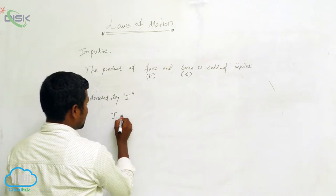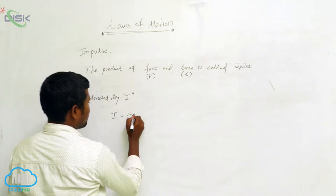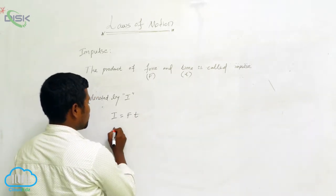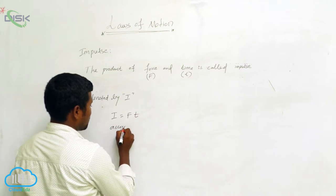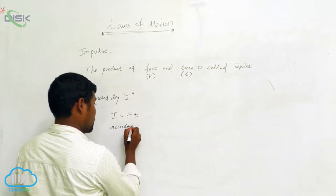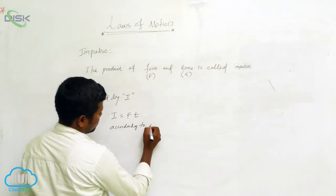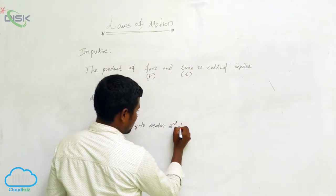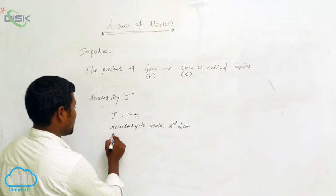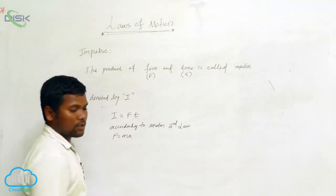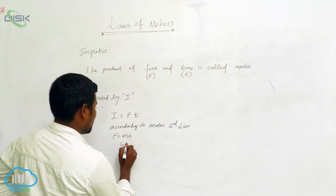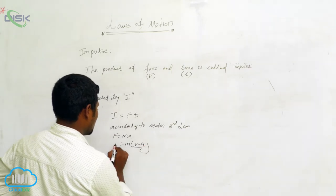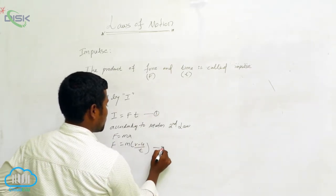So impulse I is equal to F into T. What is F here? Force. According to Newton's second law, F is equal to ma, and acceleration a is equal to v minus u by t. This gives us equation one and equation two.